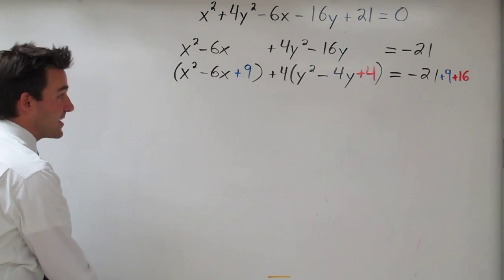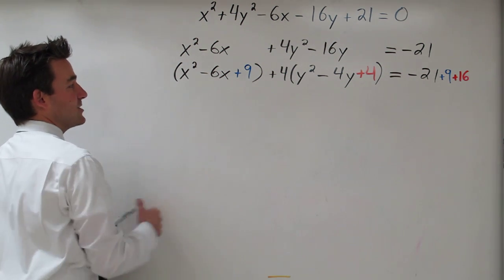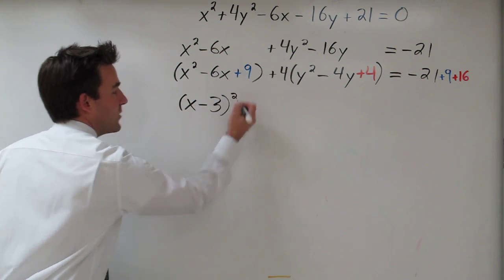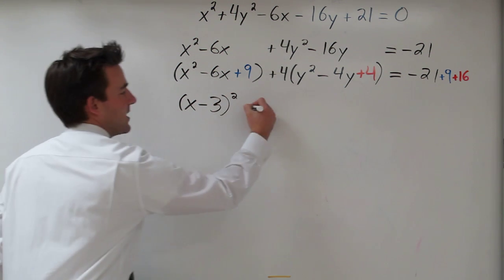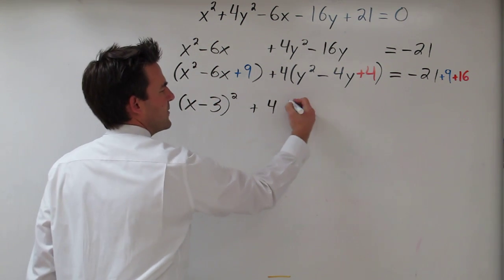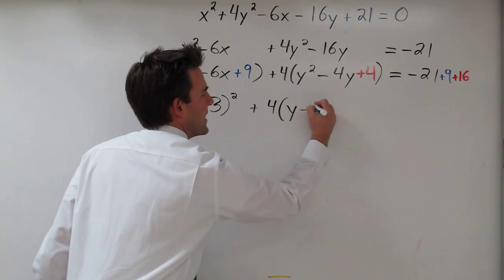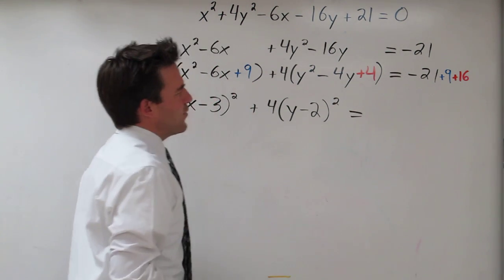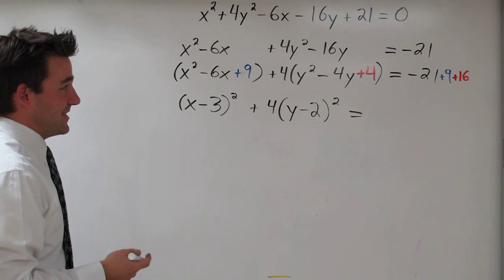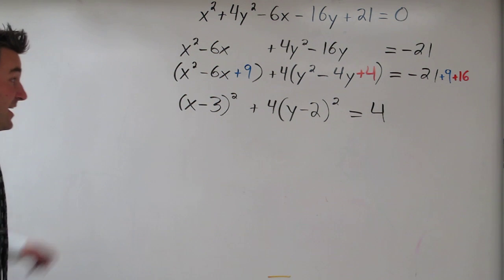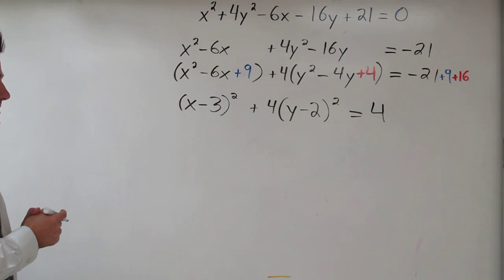Alright. Now when I simplify everything, let's see where we're at. When I completed the square, I could rewrite this as x minus 3 squared plus 4. I completed the square here, so now my perfect square trinomial factors to y minus 2 squared. And then on this side, negative 21 plus 9 plus 16. Well, 9 and 16 is 25, so I think I'm going to end up with a 4 here. It's starting to look like a standard form of a conic section. It looks like an ellipse.